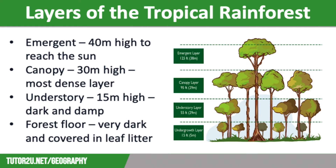Below the emergent layer you will find the canopy. This is the most dense part of the rainforest and is home to the most species. Trees can grow here to 30 metres and receive high levels of sunlight.